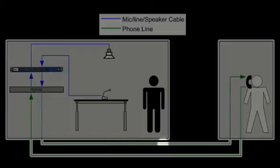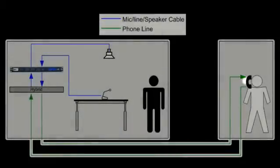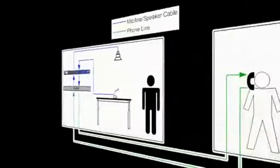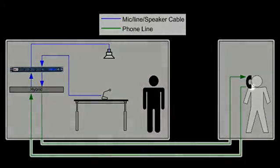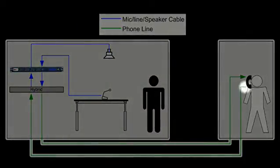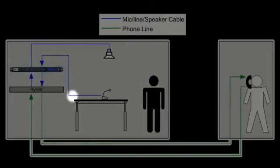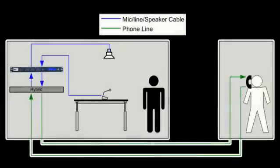The echo heard by the far-side talker can seriously hinder effective communication during a call. Fortunately, BSS Audio's new AEC input card provides a perfect solution to this problem. The fundamental goal of AEC is to prevent any far-side speech from returning to the far-side. While the far-side receives the primary benefits, the near-side also indirectly benefits from the overall improvement in communication. In addition to echo cancellation, the AEC input card also provides powerful features such as noise cancellation and automatic gain control.